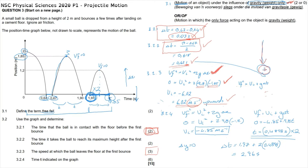For any equation of motion used: one mark for the equation, one mark for correct substitution, and one mark for the answer. Question 3.2.4 is a six-mark question requiring two equations of motion: marks for formula and substitution for each, one mark for the correct time to return after the second bounce, and a final mark for demonstrating you understand you need to add the original 1.97 seconds to find the final time T.